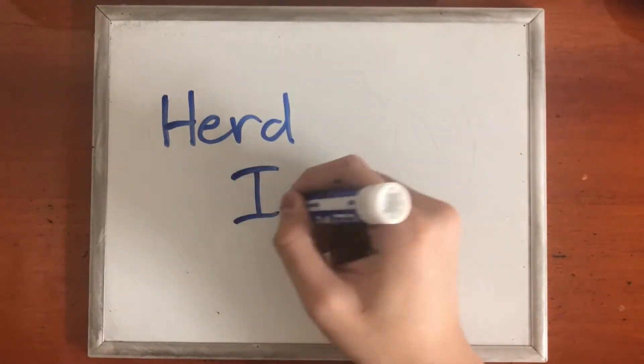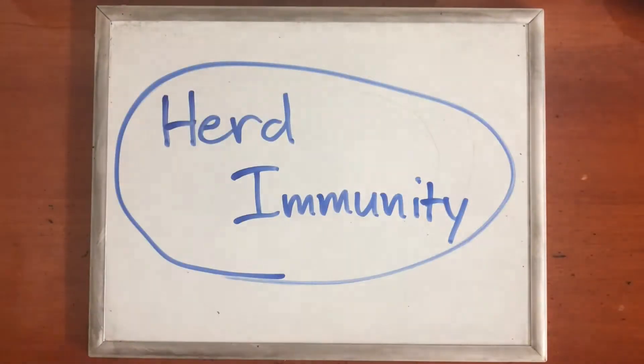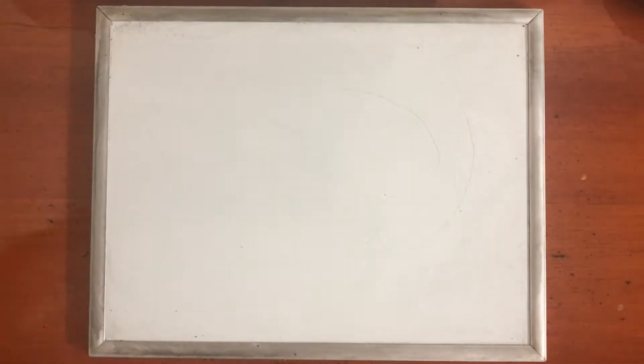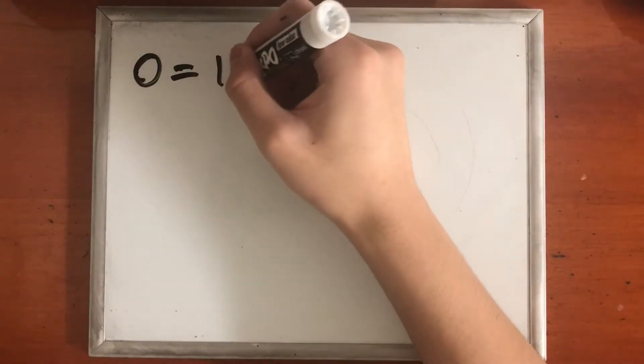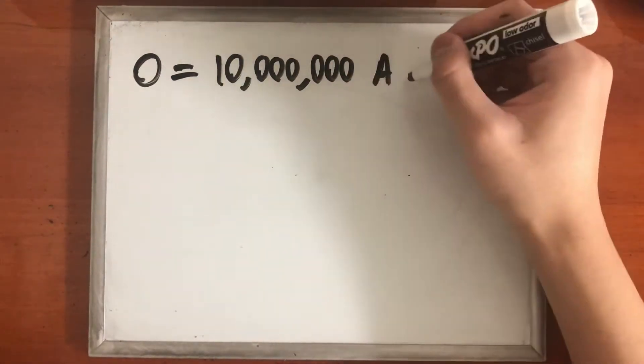In order for a vaccine to be effective within a country like the US, we must achieve what's called herd immunity. According to the CDC, there are currently almost 330 million people living in the US,